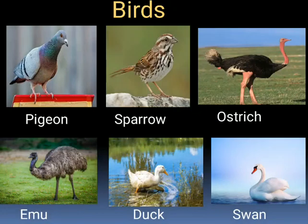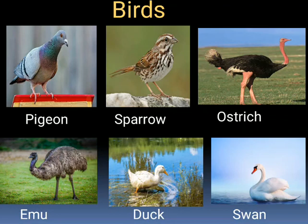Birds. Birds are animals that can fly. They have wings that help them to fly. They walk with the help of two legs. Most birds live on trees and make a nest. Parrot, sparrow, crow and pigeon are some birds.